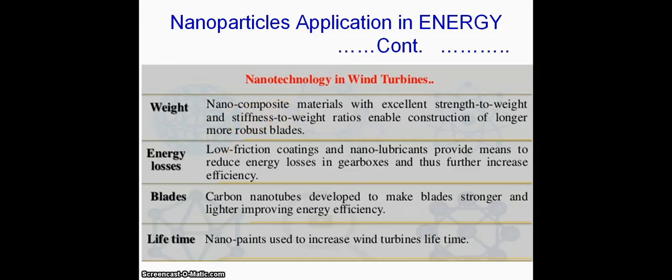For energy losses, low friction coatings and nanolubricants provide means to reduce energy losses in gearboxes and thus further increase efficiency. Carbon nanotubes developed to make blades stronger and lighter, improving energy efficiency.